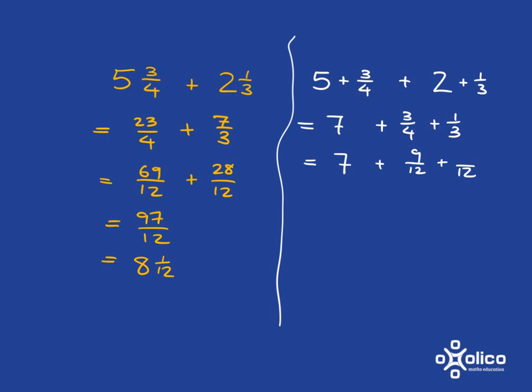Again, common denominator of 12. We've multiplied the denominator by 3, so 3 times 3 is 9, and here we've multiplied the denominator by 4, so 4 times 1 is 4. Then we get 7 and 13/12, and 13/12 is just 1 and 1/12, so we get our answer as 8 and 1/12.